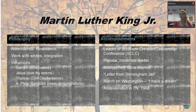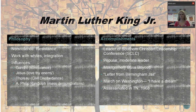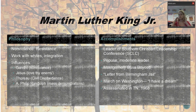He was actually writing to other black pastors in the South who said if we're going to get arrested, we need to stop doing this. And he said no — you need to keep doing this because what we're fighting for is very important. He also led the March on Washington, where he gave his 'I Have a Dream' speech. Thousands of people showed up to this march as a way of showing the federal government that we need a civil rights bill and that lots of people are supporting it.